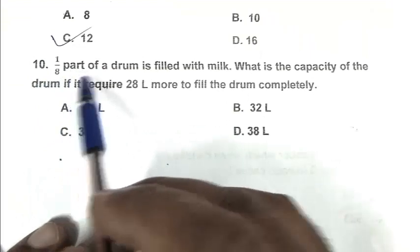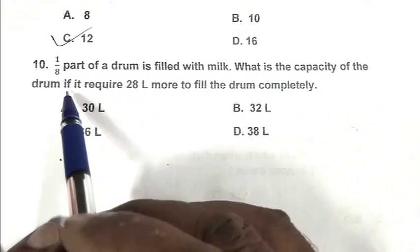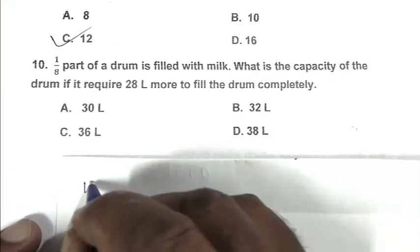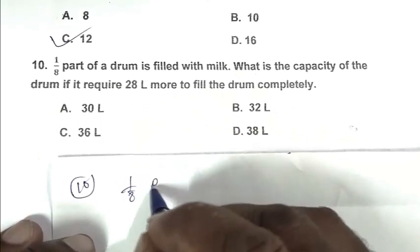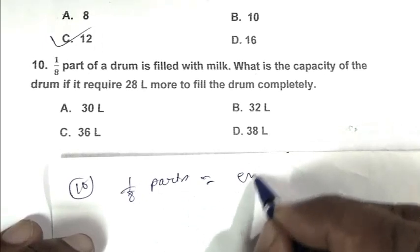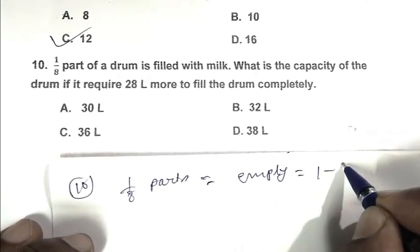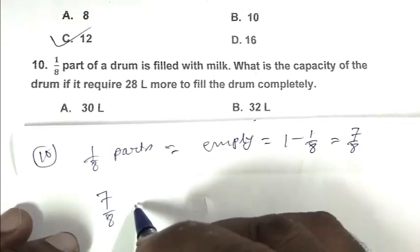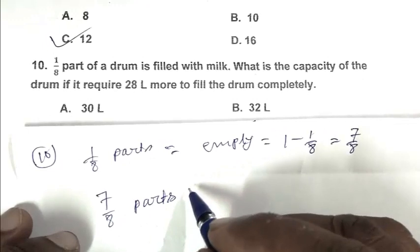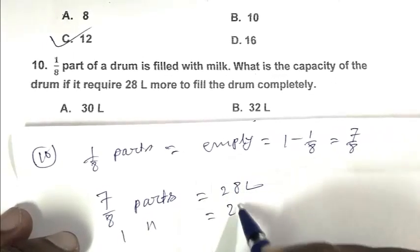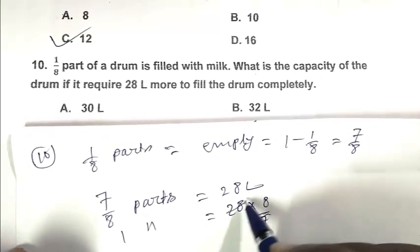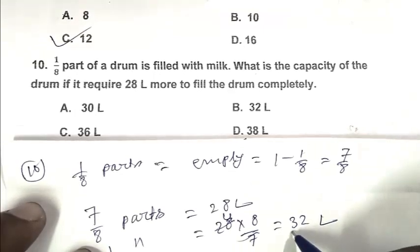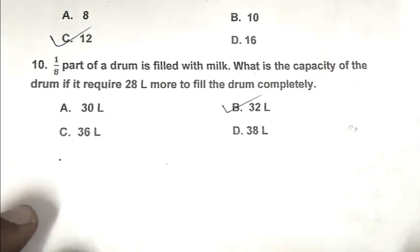Question number 10: One-eighth part of a drum is filled with milk. What is the capacity of the drum if it requires 28 liters more to fill the drum completely? So friend, the drum is filled with 1/8 parts. So empty is 1 minus 1/8, that is 7/8. According to the question, 7/8 parts equals 28 liters. So one part equals 32 liters. So friend, the capacity of the drum is 32 liters. B is the right answer. Thank you for watching, have a good day.